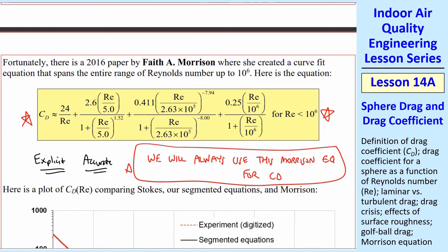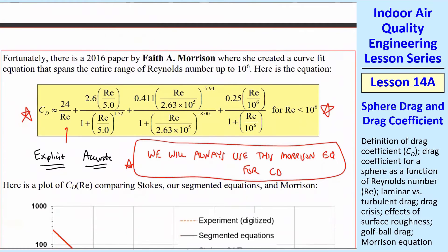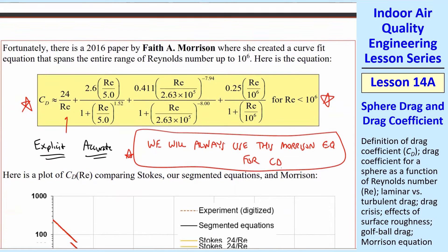And I just want to put lots of stars around here and say, in this course, we will always use this Morrison equation for CD. The only exception is when we know we have really small Reynolds numbers. And I say 0.1, but if you have 0.0038 or something like that, 24 over RE is going to give you a really good approximation. And it's much simpler to just plug that in. But you can see that her equation has 24 over RE in it, and then it just has all these other correction terms to get the whole curve.